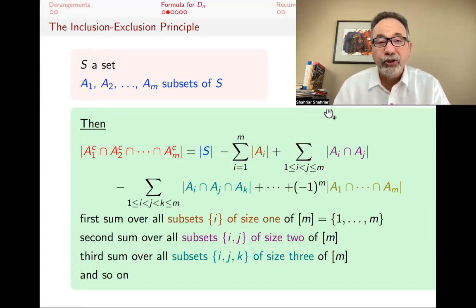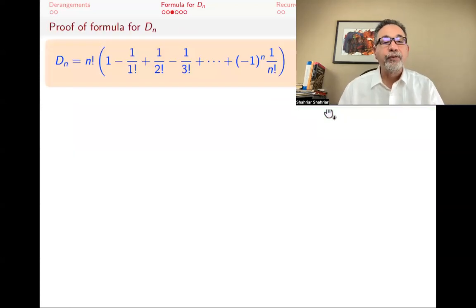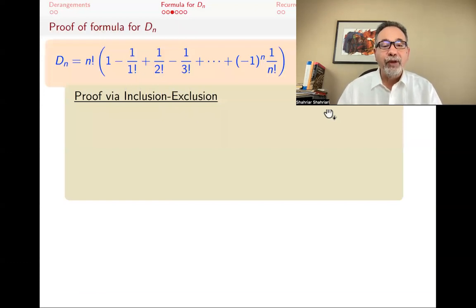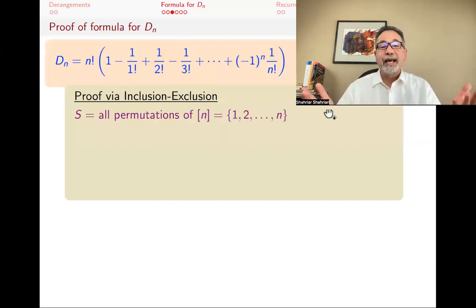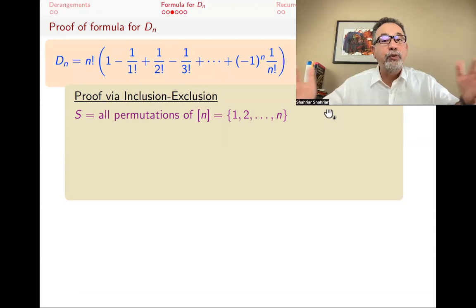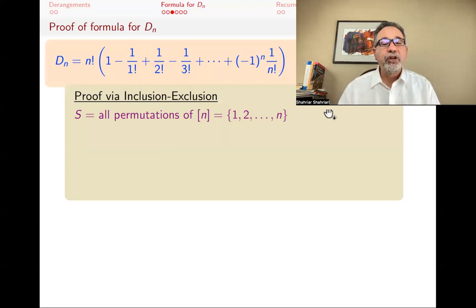If this is completely foreign to you and sounds like gibberish, go watch the other video. Otherwise, we are going to use it to prove the formula for the number of derangements D_N. To do that, we have to set up our ambient set. So the set S here is all permutations of 1 through N.